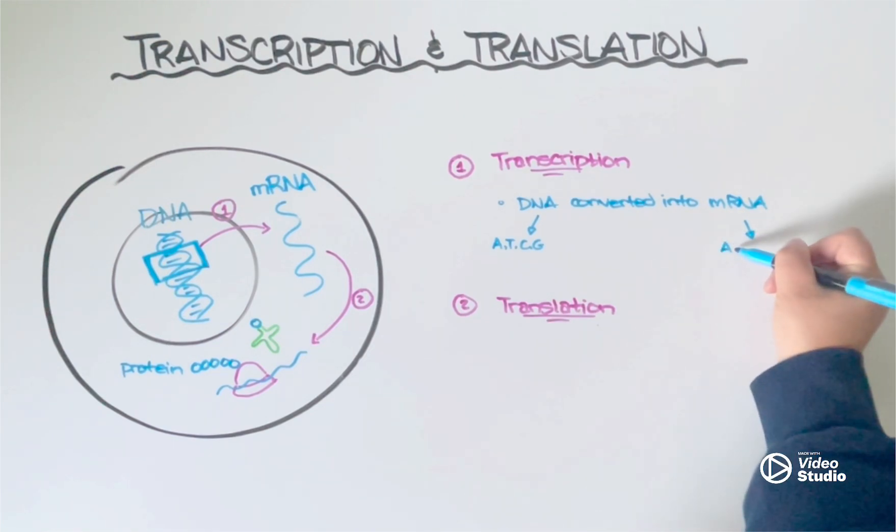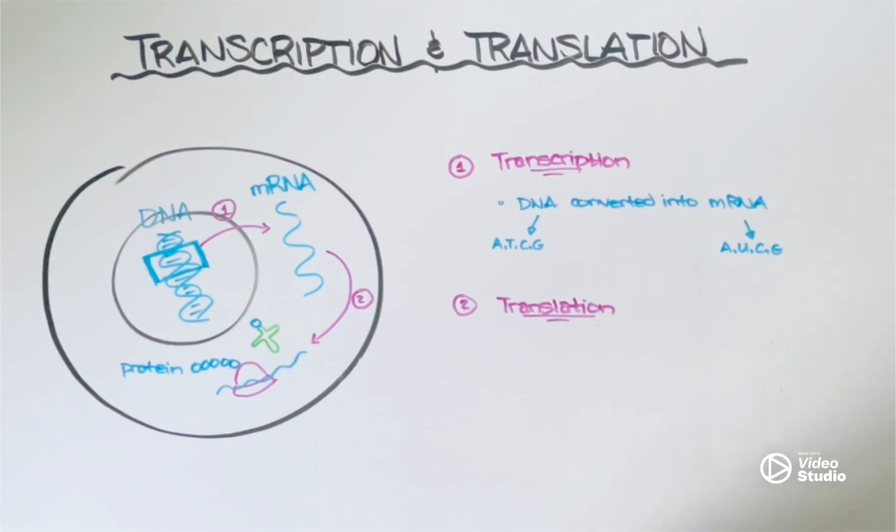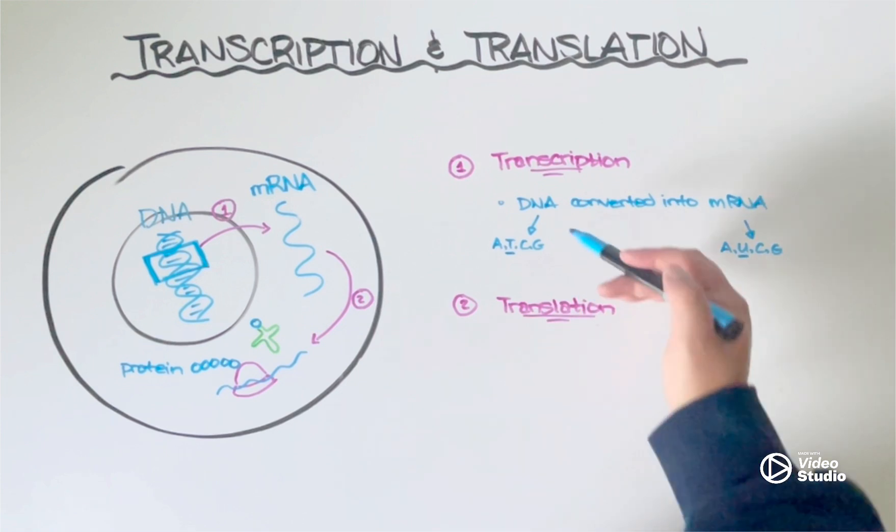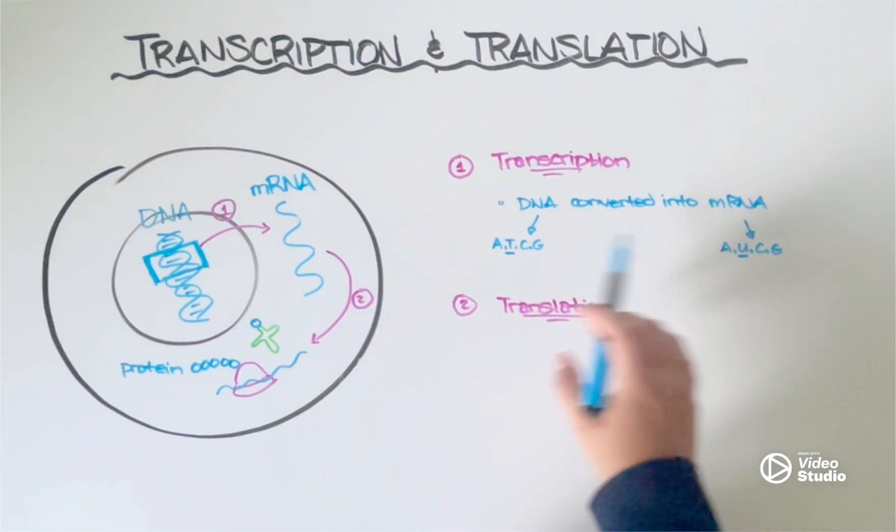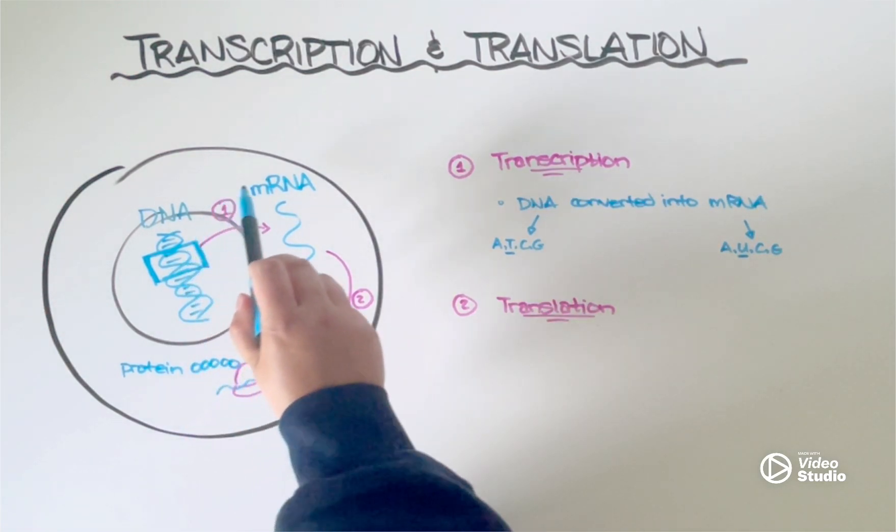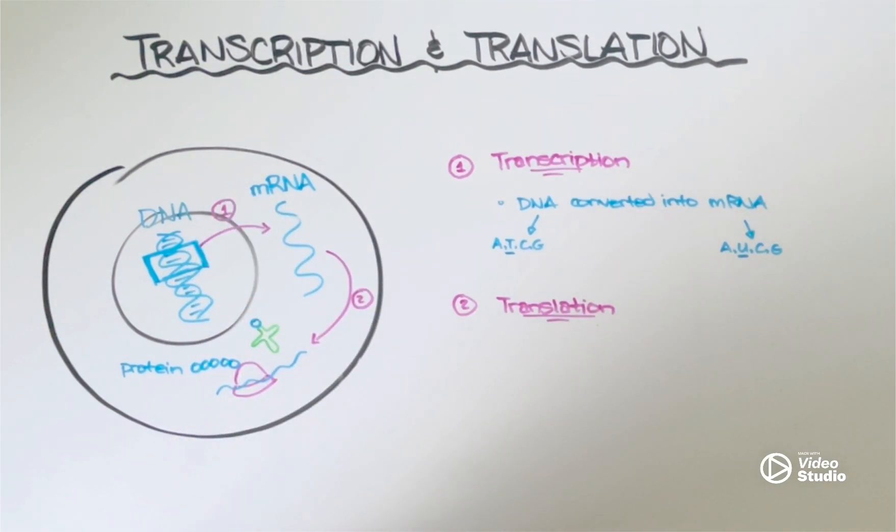mRNA contains adenine, uracil, cytosine, and guanine. So anytime you take a look at a molecule and you see a U in it, you know it's RNA, whereas if it has a T in it, you know it's DNA. And although they both have that alternating sugar phosphate backbone, the sugar that's found in DNA is deoxyribose, whereas the sugar that's found in mRNA is just ribose. And so they do have some similarities, but their differences are what allow the mRNA molecule to then leave the nucleus and enter the cytoplasm of the cell.